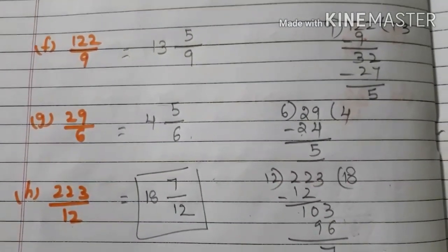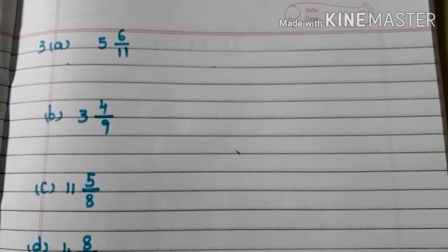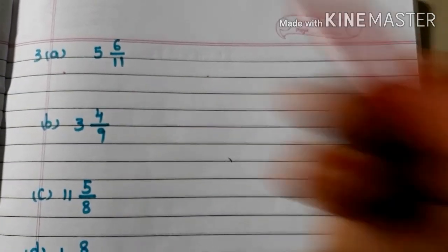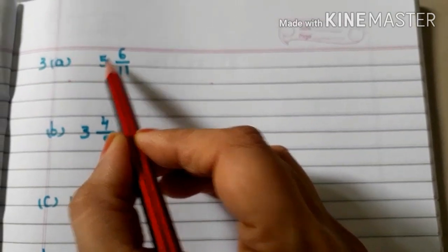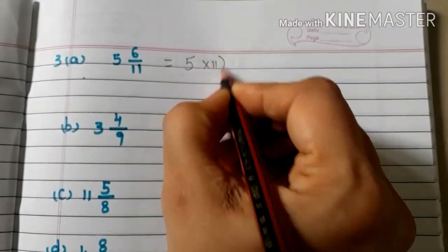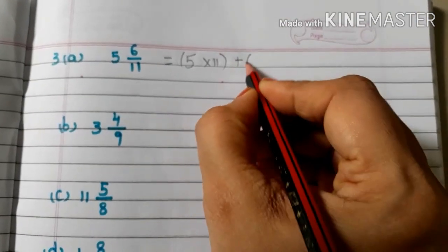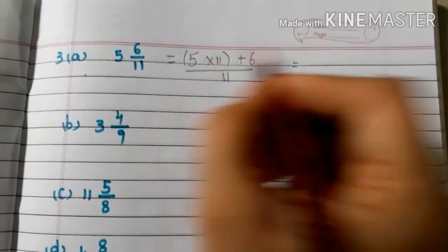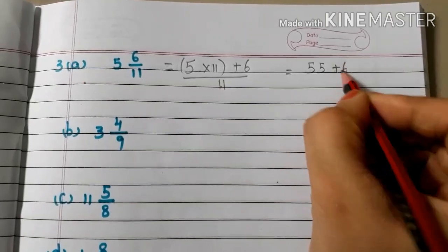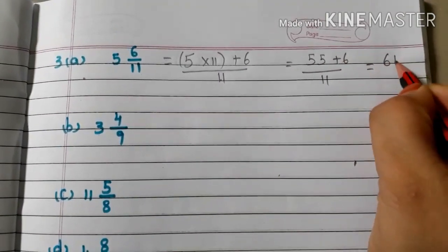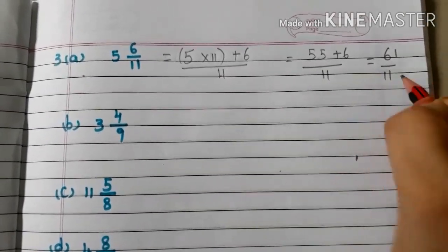Now question number 3: convert each of the following mixed fractions into improper fractions. A: 5 and 6/11. Write whole number into denominator plus numerator, by denominator. 5 elevens are 55, plus 6, by 11. 55 plus 6 is 61/11.